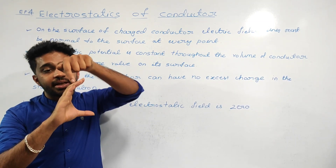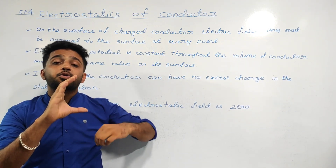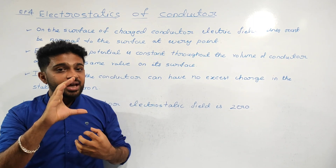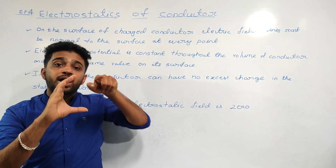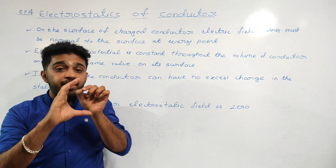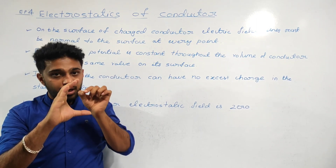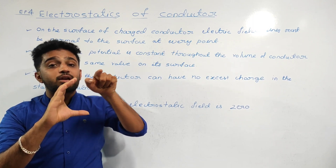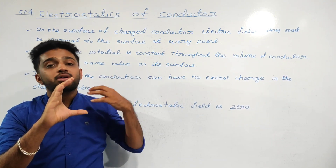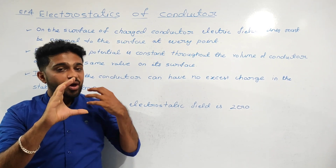The electrostatic potential at any point on the surface is also constant. Whether we calculate the electrostatic potential inside the conductor or on its surface, the value is the same — it is constant.